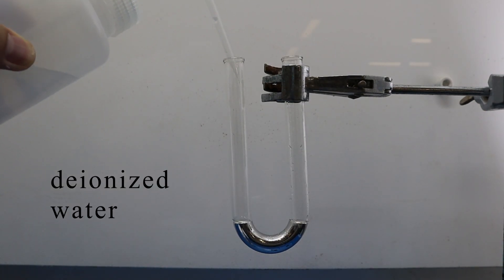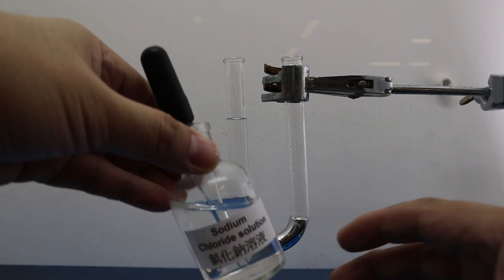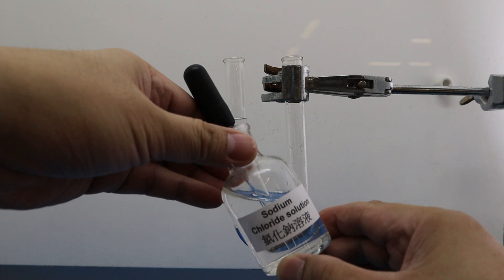Then the deionized water is added to the left-hand side of the U-tube. Concentrated sodium chloride solution is added to the right-hand side of the U-tube.